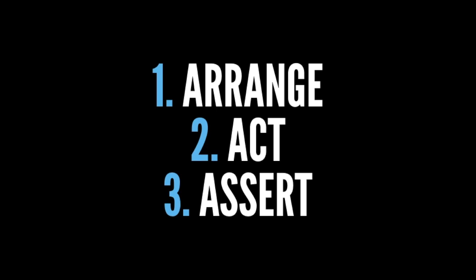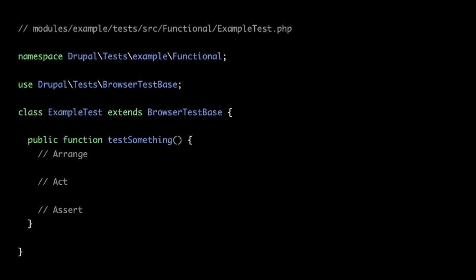Different types of tests all follow the same format: we start off by arranging — setting up users, nodes, a queue, creating a world. The second phase is acting — something needs to happen, maybe a user gets logged in or a queue item gets processed. Then we write assertions to say we think something should have happened and verify whether it did. This is an example test case — a PHP class with the filename matching the class name. The namespace includes the word 'functional' because it's a functional test, and we add our test method where we do our three steps.